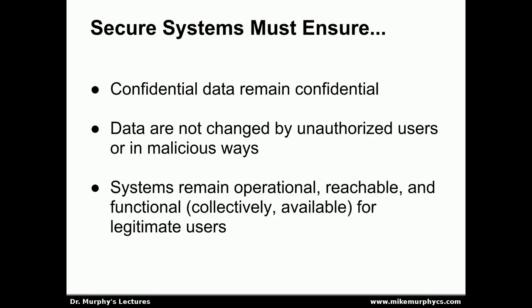So secure systems must guard against these problems. They must ensure that confidential data remain confidential, that the data are not changed by unauthorized users or by authorized users acting with malicious intent — such as someone inside the company trying to steal information or commit fraud. And the systems must remain operational, reachable, and functional — or collectively, available — for legitimate users. Availability means the system is up and running, accessible, and functioning correctly for users who are authorized to use it.